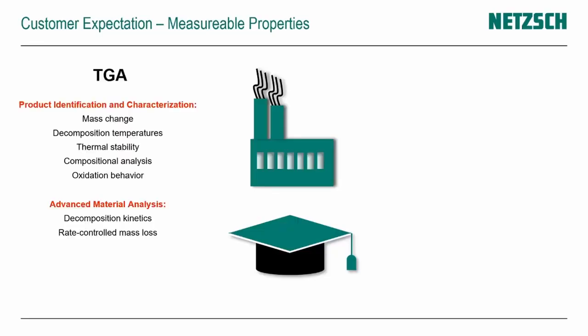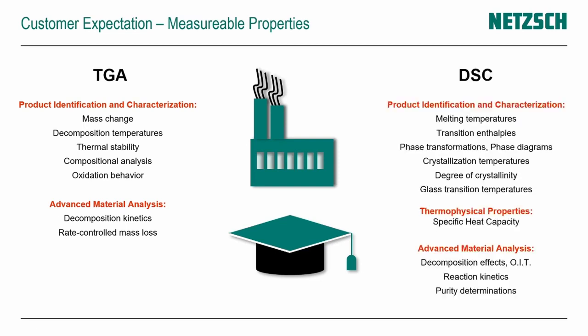Before we come to the methods and instruments, let's have a general look at what we expect from TGA and DSC analysis. For TGA analysis, we typically talk about material properties like mass change, decomposition temperatures, and thermal stability — all properties which identify or characterize products. TGA also allows advanced material analysis like, for instance, the analysis of the kinetics of a decomposition reaction.